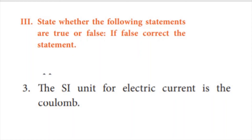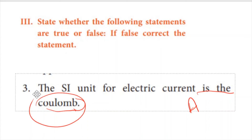One true or false question: the SI unit of electric current is coulombs. We know that the SI unit of electric current is ampere, not coulombs. Coulombs is the unit of charge, whereas ampere is the unit of current. So this statement is false.